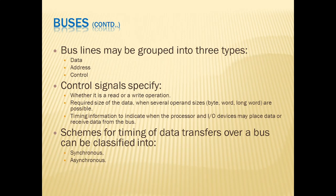If a bus is used only for sending data from one device to another, it is called the data bus. Similarly, if a bus is used to send the address from one device to another, it is called the address bus. And if a bus is used for sending control signals from one place to another, it is called the control bus.